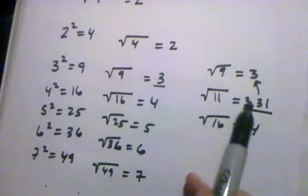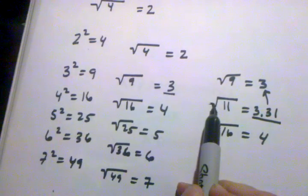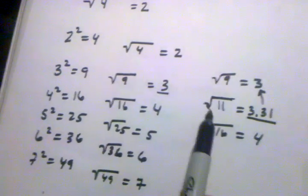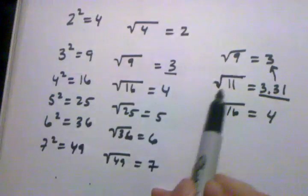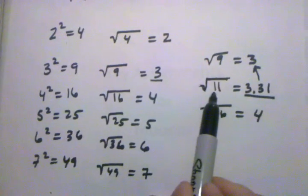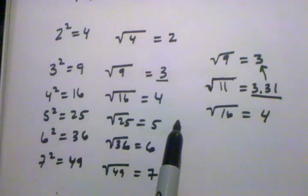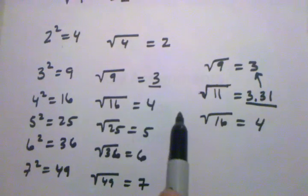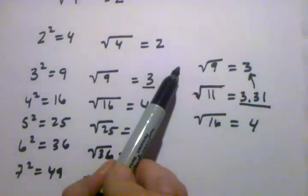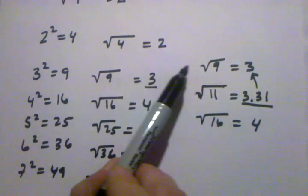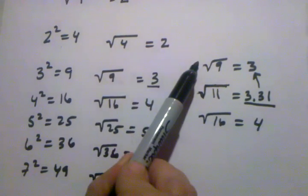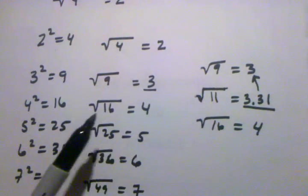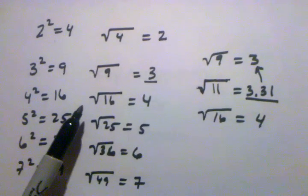So we like to say: if we had to estimate and didn't have a calculator, and we were given a number like eleven to take the square root of, we could come up with a very close guess by taking the square root of the two perfect square numbers on each side of eleven.